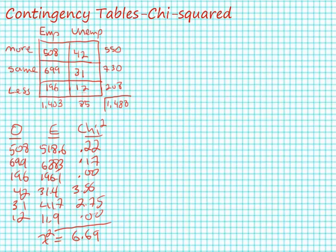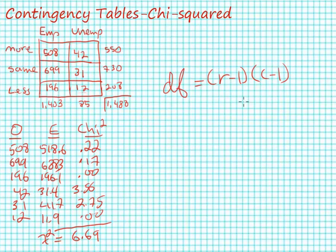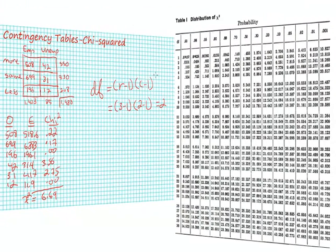Now that we've calculated our chi-square for this table we have to compare it to something, to determine whether chance is operating — that is, whether these two measures are independent — or whether the independent variable (whether one's employed or unemployed) affects attitudes about government spending on unemployment benefits. The first step is to determine our degrees of freedom. That's determined by table size: the number of rows minus one times the number of columns minus one, which in our case is (3−1) × (2−1) = 2.